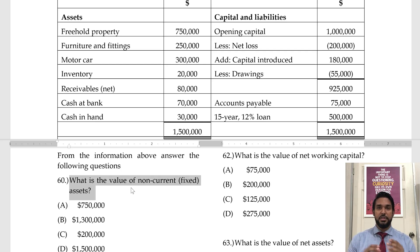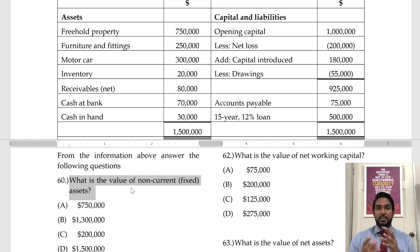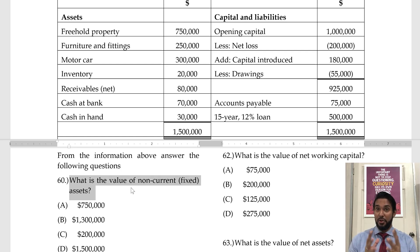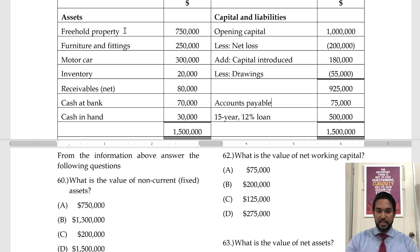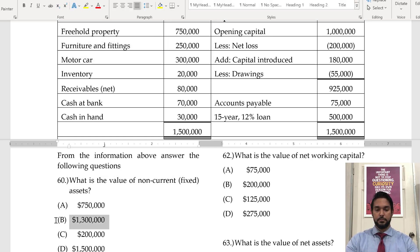In the CSEC multiple choice papers, sometimes they present information slightly differently to see if they can catch anybody who does not properly know their work. So yes, it seems a bit repetitive, but I'm doing it for a purpose — it's not just filler. Non-current assets: freehold property, furniture and fittings, motor car. 750 and 250 is a million, plus 300 is 1.3 million. That's option B — 1.3 million.